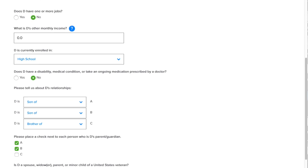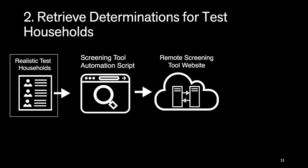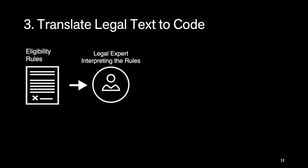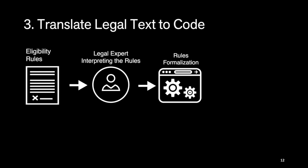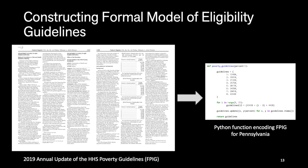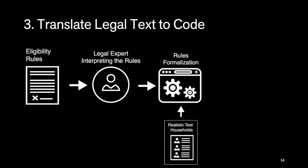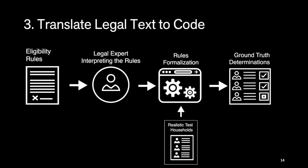We scrape the results page from the screening tool and store the determinations for each household. Next, a legal expert translates the eligibility rules into formal code models. We end up with a Python function for each benefit that accepts the household's information as an argument and returns a boolean indicating whether the household is eligible for that benefit. This is an excerpt from our appendix—we have our legal text on the left and our Python function that encodes the relevant rules from that text on the right. We pass our households into those functions to get our ground truth determinations.